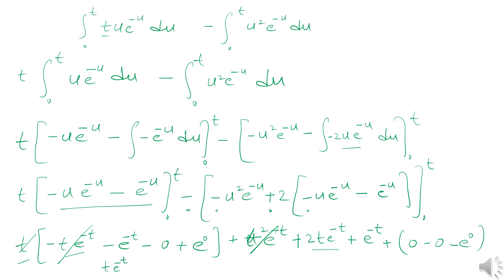Wait — I forgot to multiply by 2 here, so it will be 2. Because there was a factor of 2 here that I missed. So the terms involving t e to the power negative t become 2t e to the power negative t, and we also pick up a factor of 2 for e to the power negative t terms. We are now near the solution.